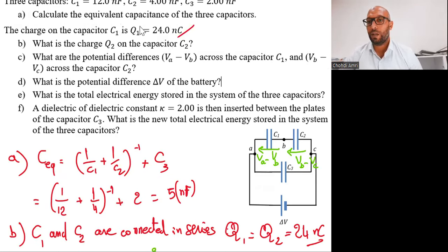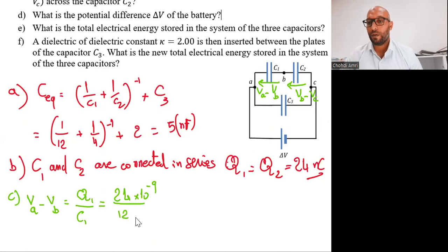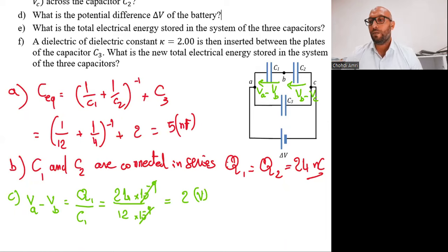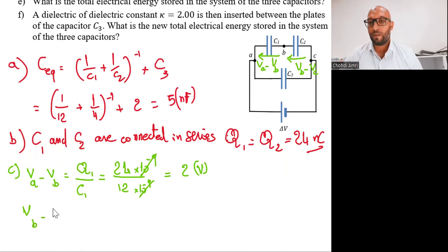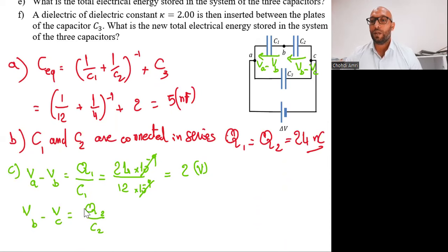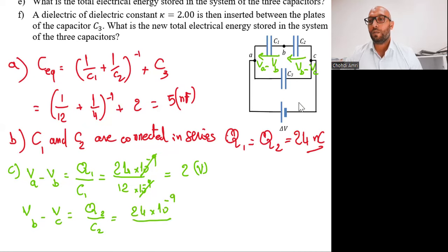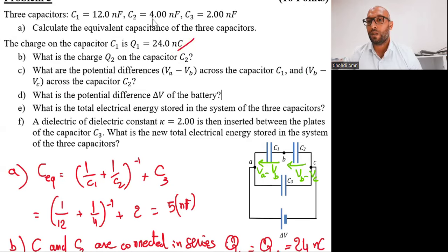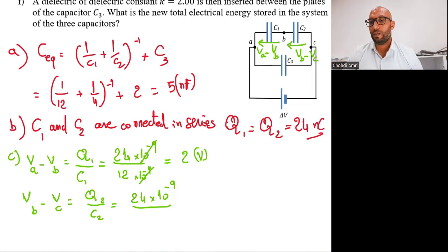So we write 24 times 10^(-9) coulombs divided by C1, which is 12 nanofarad — that means 12 times 10^(-9). We can simplify and get 2 volts for the first one. For the second one, VB minus VC, we do the same thing: Q2 divided by C2. The potential difference across C2 equals 24 nanocoulombs divided by 4 times 10^(-9), giving us 6 volts.